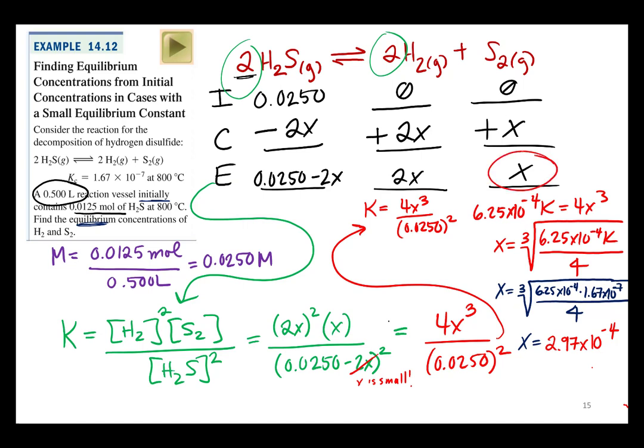So that is my concentration of S2. And it's also looking for my concentration of H2, and that would just be twice that. So my concentration of S2 is 2.97 times 10 to the negative 4 molar. And my concentration of H2 is 5.94 times 10 to the negative 4 molar.